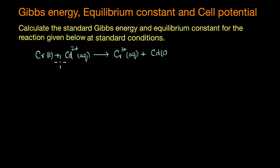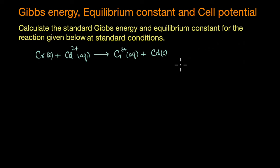We can see that Cr + Cd²⁺ gives Cr³⁺ + Cd. Under standard conditions, the cell potential is equal to the standard cell potential E°cell. The first step is to write down the half reactions, and to do that we need to identify the species undergoing oxidation and reduction. Chromium changes its oxidation state from 0 to +3, whereas cadmium changes from +2 to 0. So chromium is getting oxidized and cadmium is getting reduced.